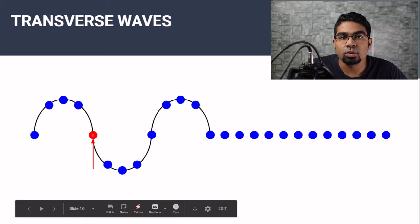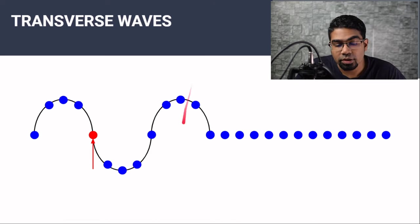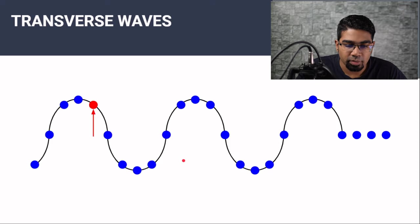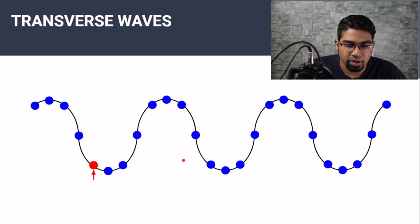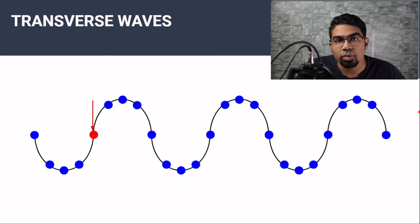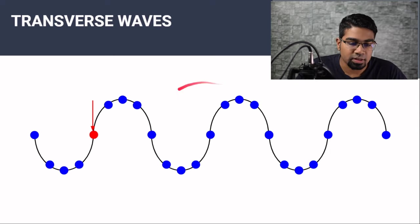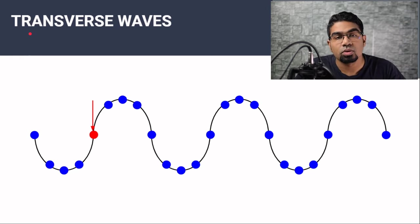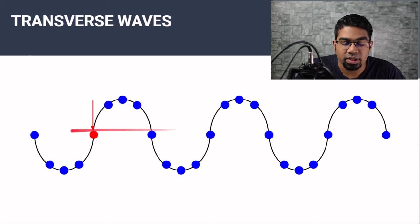So this is one full oscillation. As the wave continues to flow, the particle will still move up and down continuously. So will all the other particles. One important point to note here is that the particle does not move left or right. When the wave passes through the particle, the particle only moves up and down. There is only vertical displacement; there is no horizontal displacement.